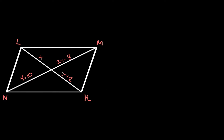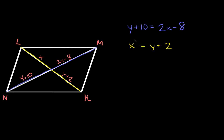Here's the last example. This parallelogram has two intersecting lines, and when you have two intersecting lines, they intersect at the midpoint — cutting each line in half. So we have unknown lengths: x, 2x minus 8, y plus 2, and y plus 10. We can solve for these variables by setting the equal-length segments equal to each other: y plus 10 equals 2x minus 8, and x equals y plus 2. This gives us a system of two equations with two unknown variables, x and y.